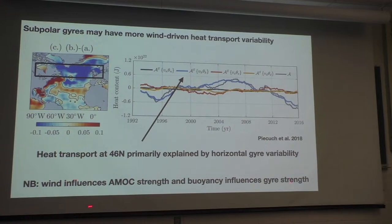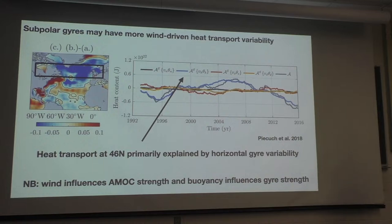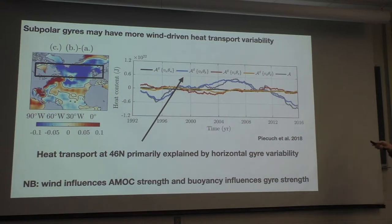Wind sometimes influences the strength of the AMOC, and buoyancy sometimes influences the strength of the gyres. Historically we thought of the overturning circulation and gyres as being separate things — one controlled only by buoyancy and one only by wind. But actually there's an entangled mess, and no separation will truly separate those two drivers. The goal here is just to separate the two pieces — gyres versus overturning — so we can say how much of the overturning is controlled by wind and how much by buoyancy, then further budget where all the variability comes from.